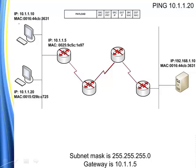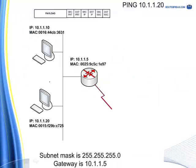What we have here is two computers on our local segment and our router. We're going to ping 10.1.1.20, which is on our local segment. One of the first things a computer does when trying to reach a destination is it's going to compare its local IP address to the destination IP address that it's trying to reach.